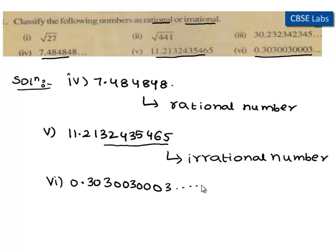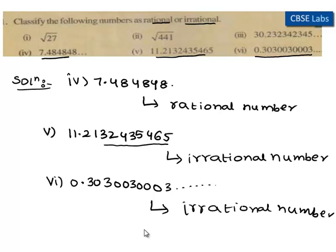And so on. As we know, a non-terminating decimal is known as an irrational number. Here, 0.303003003 and so on is a non-terminating decimal. So we can say that 0.303003003003 is an irrational number. Hence, 0.303003003003 is an irrational number.